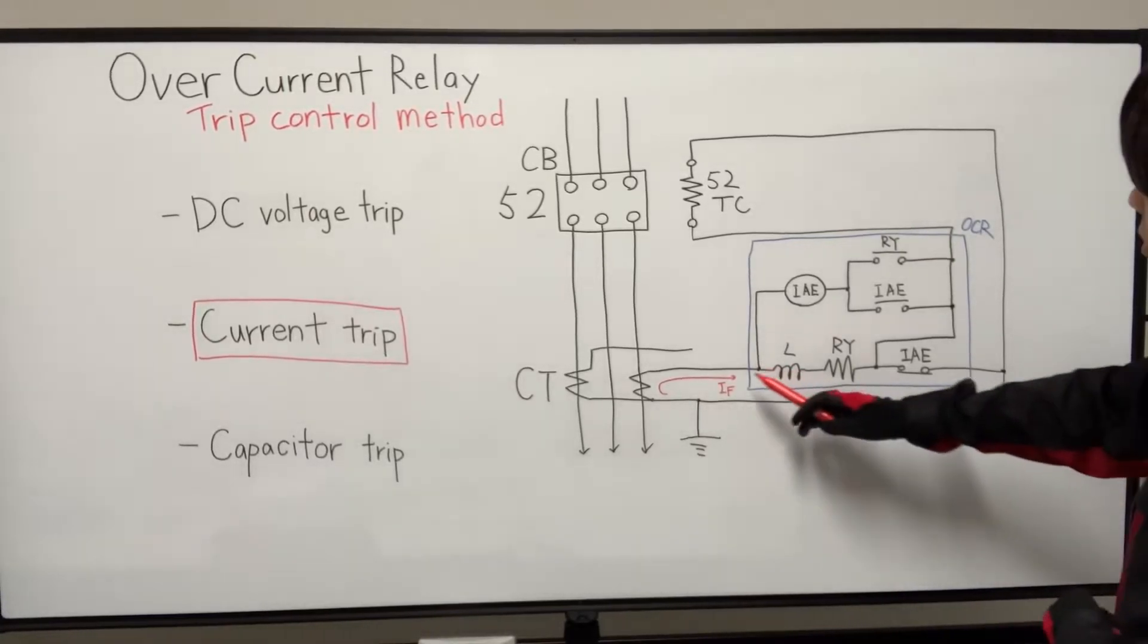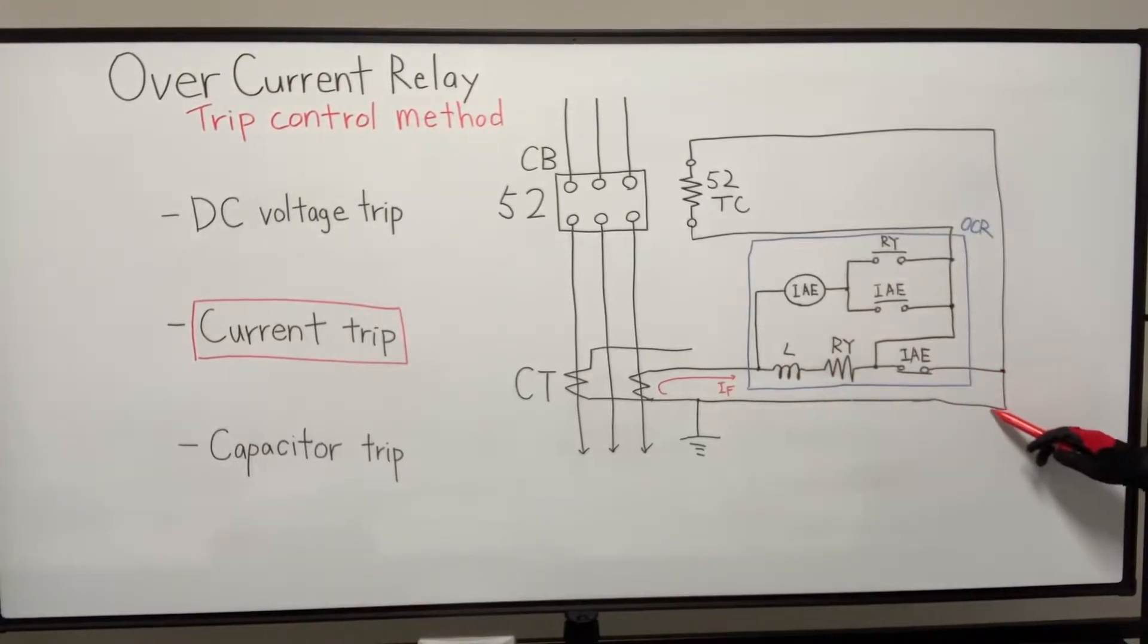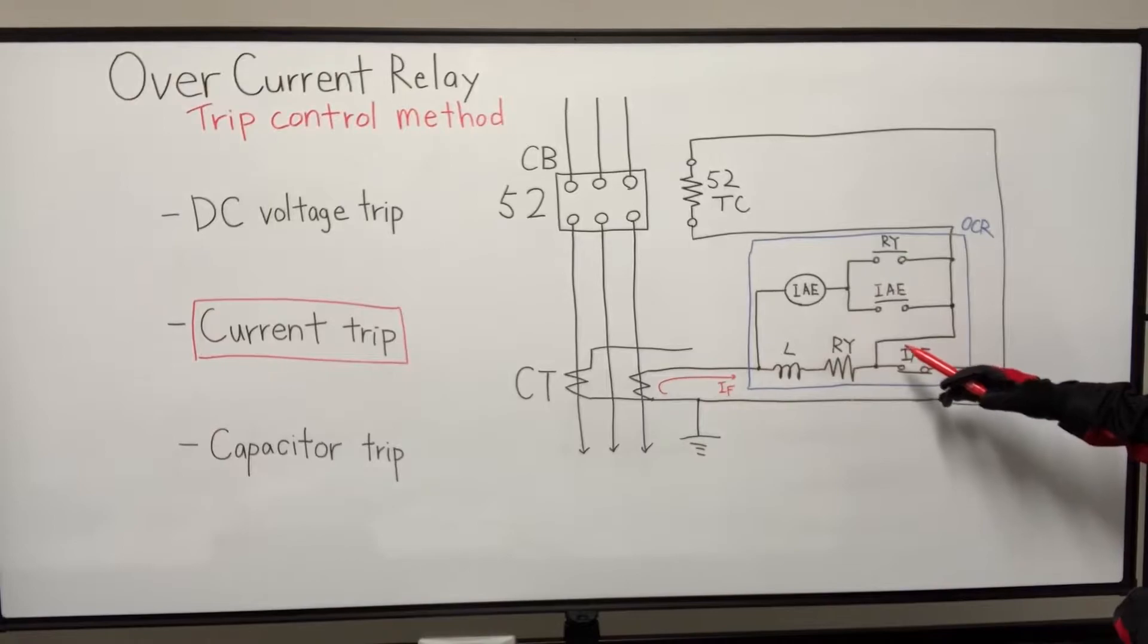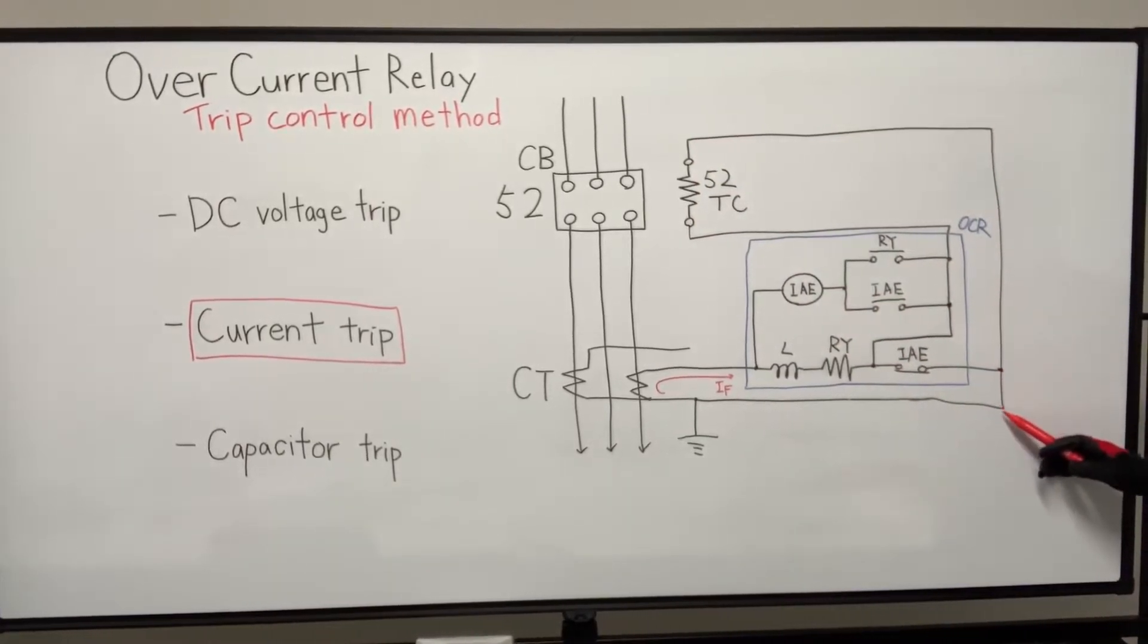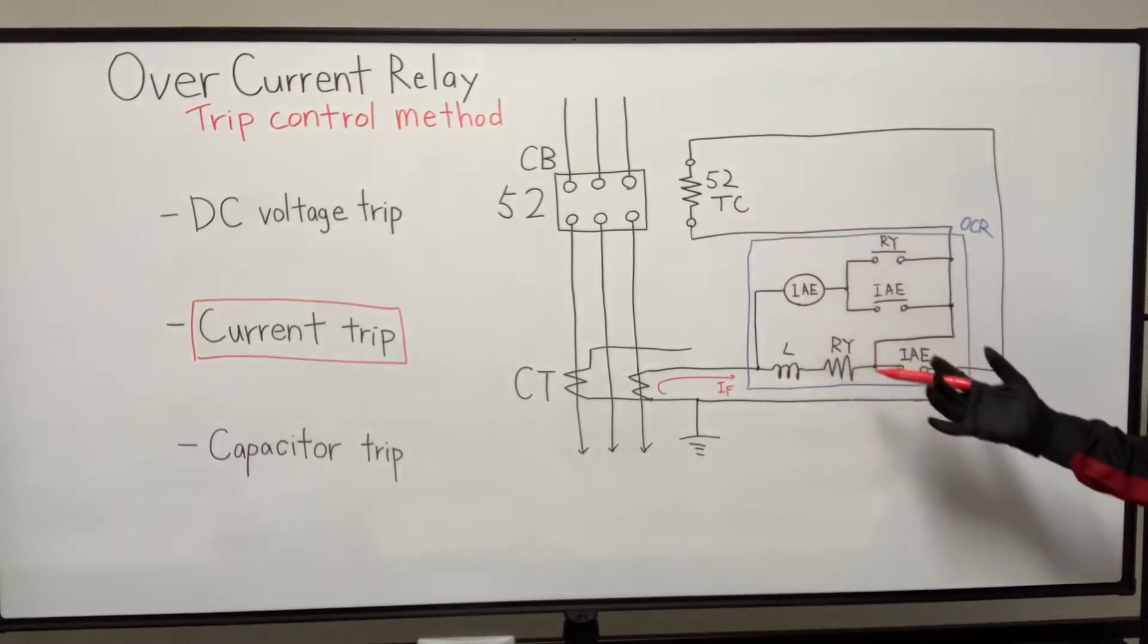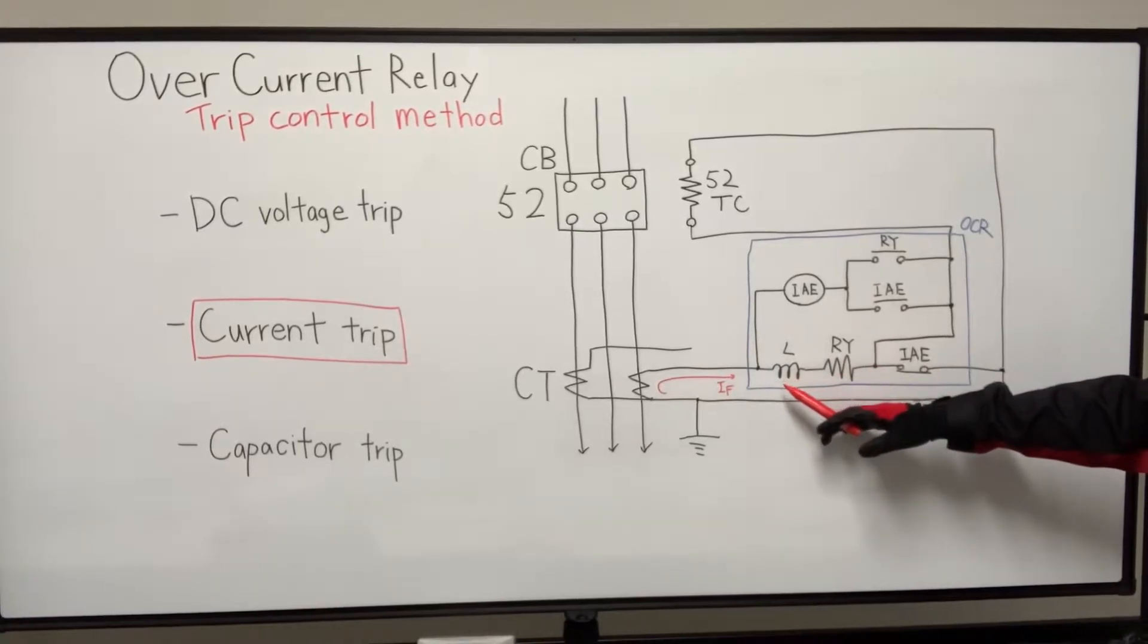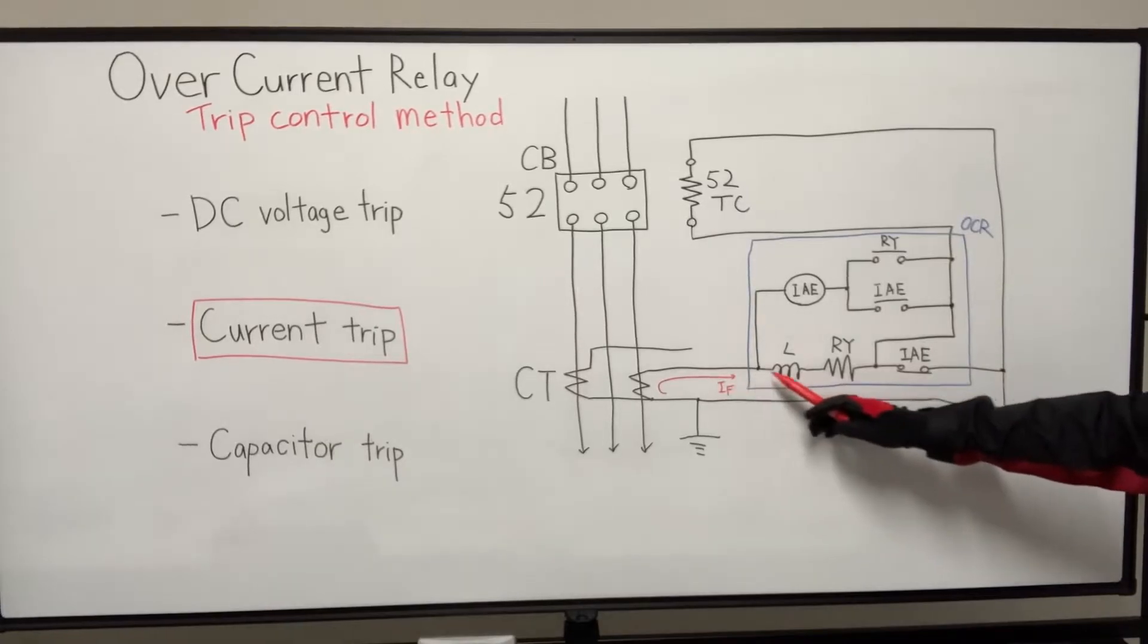And until this fault current exceeds a certain pickup value of the relay, current flow this closed path. This is normally closed contact. So this loop flowing. But here another loop is also closed in parallel. I mean, this loop and this loop is in parallel. But here is in the trigger core. And the core has some impedance. And the impedance disturbs the flow of the current. So current will go more low impedance side. So here is no load, no impedance. It's a short circuit. So current flow this loop.